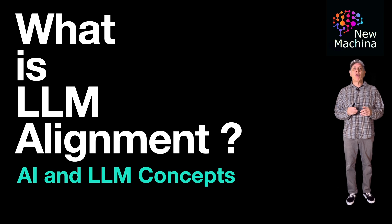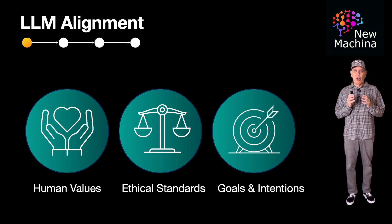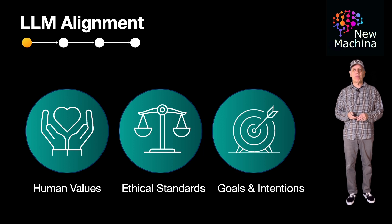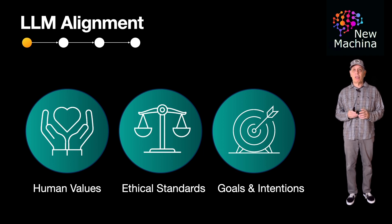LLM alignment refers to the process of ensuring that large language models behave in a way that's consistent with human values, ethical standards, and specific goals or intentions set by the users. The goal of alignment is to make sure that the LLM produces useful, accurate, and safe outputs, avoiding harmful behaviors, biased responses, or outputs that could cause unintended negative consequences.